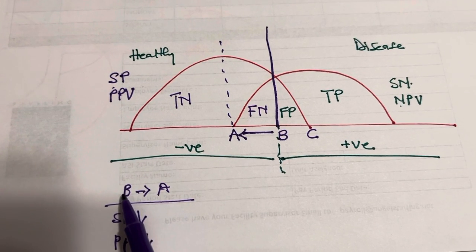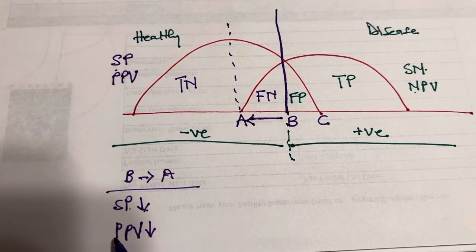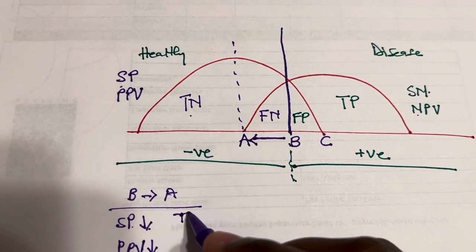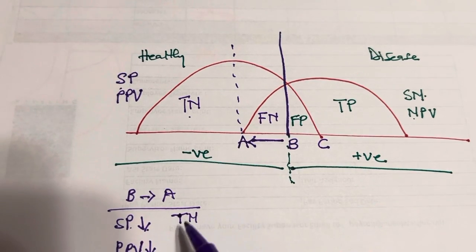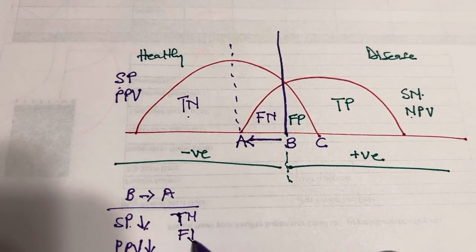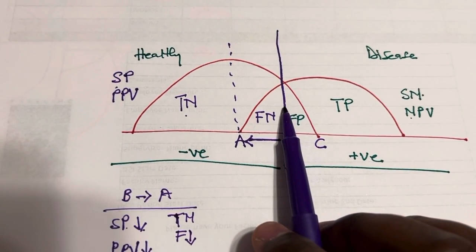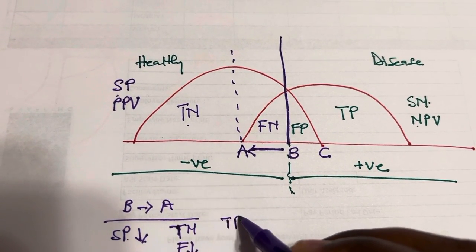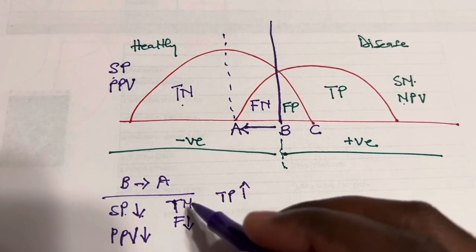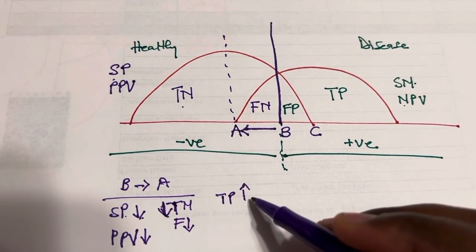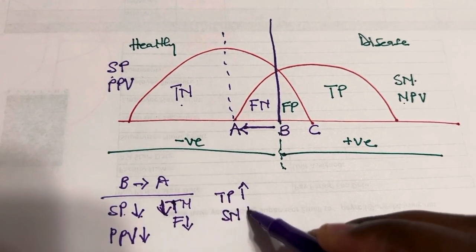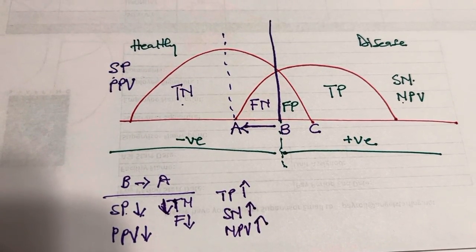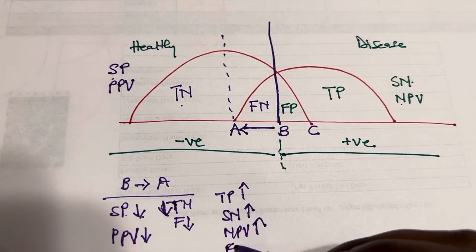So if we move the cutoff from B to A: specificity decreases, positive predictive value decreases, true negative rate decreases, and false negative rate decreases. On the other side, what increases: true positive rate increases, sensitivity increases, negative predictive value increases, and false positive rate also increases.